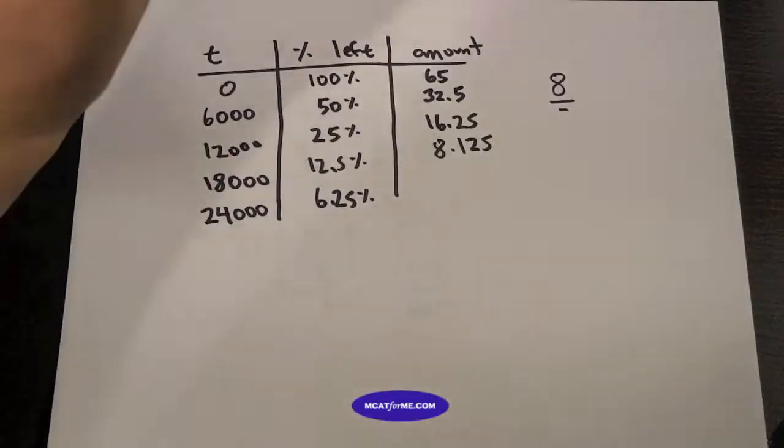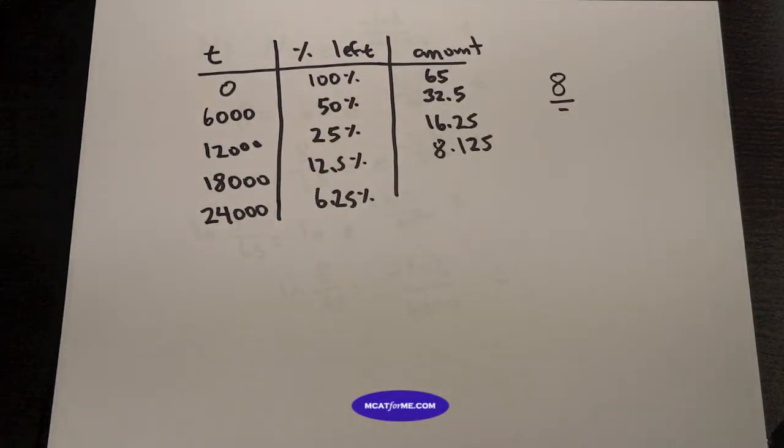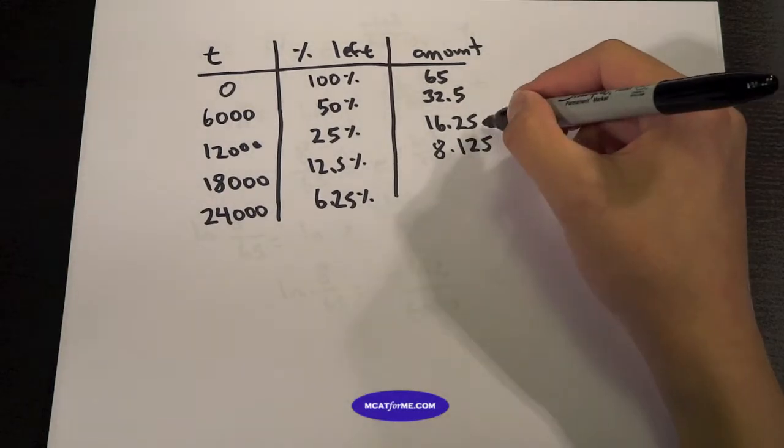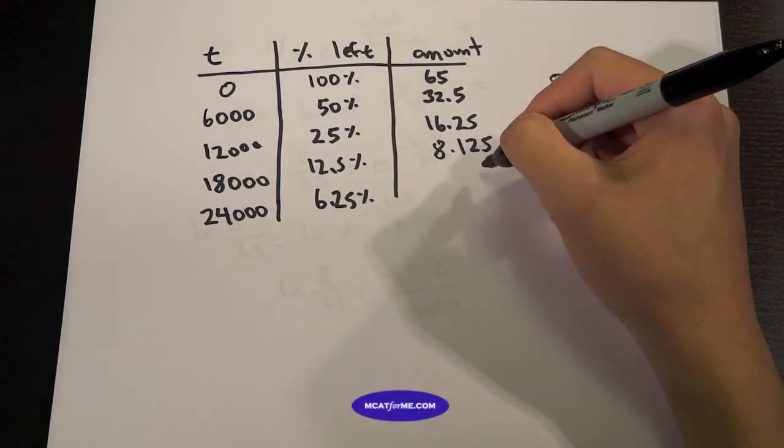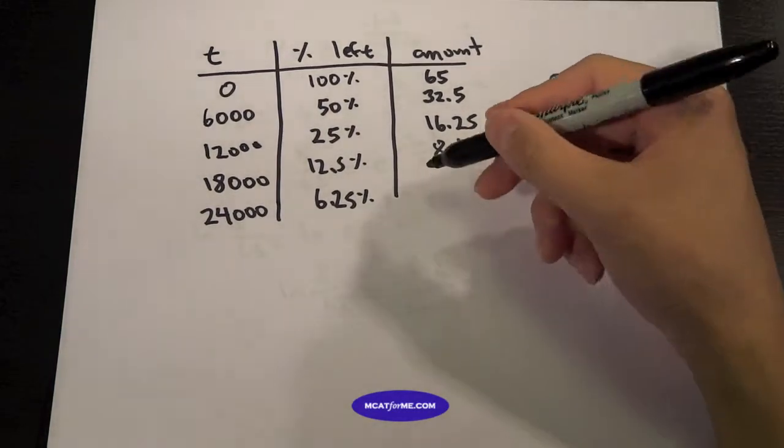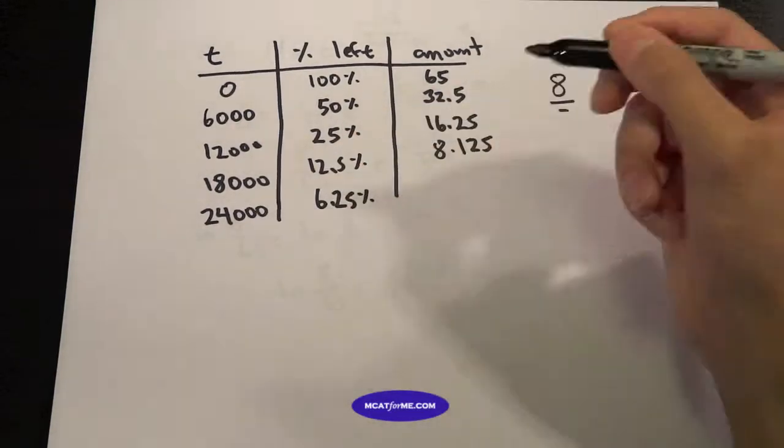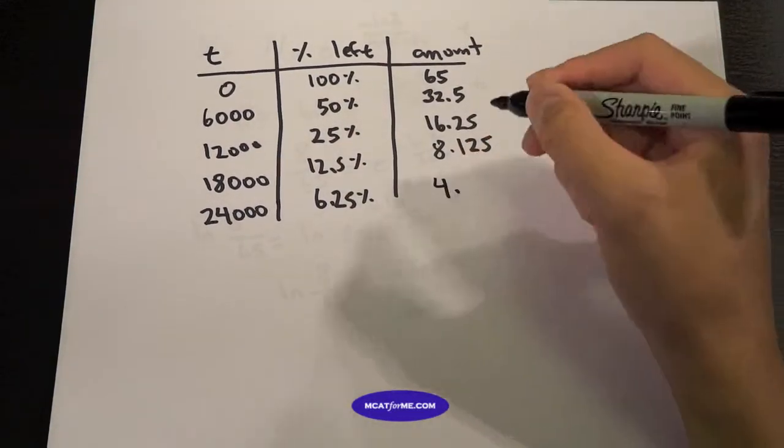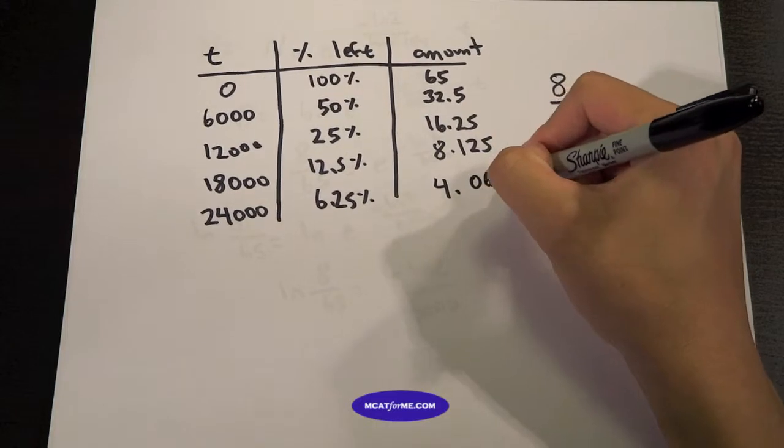So this is when we need to figure out logically, will it be less than 18,000 or more than 18,000? So a good way to do that is just figure out 24,000 years. What would we get? We'll get 4.0625.